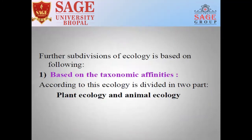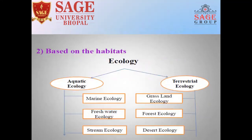Further subdivision of Ecology is based on the following. First, based on taxonomic affinities — according to this, Ecology is divided into two parts: Plant Ecology and Animal Ecology. Second, based on the habitats, Ecology is classified as Aquatic Ecology and Terrestrial Ecology.